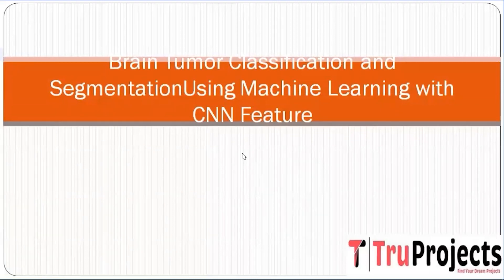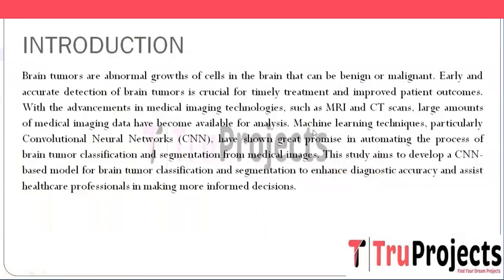Welcome to True Projects. In this video, we are going to explain a project titled Brain Tumor Classification and Segmentation using machine learning with CNN features. Brain tumors, whether benign or malignant, refer to the abnormal cell growth within the brain. Timely detection is vital for effective treatment and better patient outcomes. Recent progress in medical imaging, particularly MRI and CT scans, has generated a vast amount of data for analysis. Leveraging machine learning methods, notably CNN, has displayed significant potential in automating brain tumor classification and segmentation from medical images.